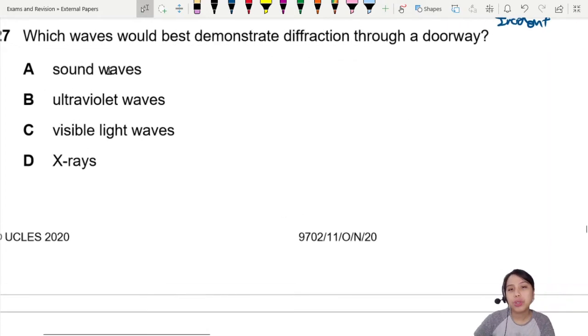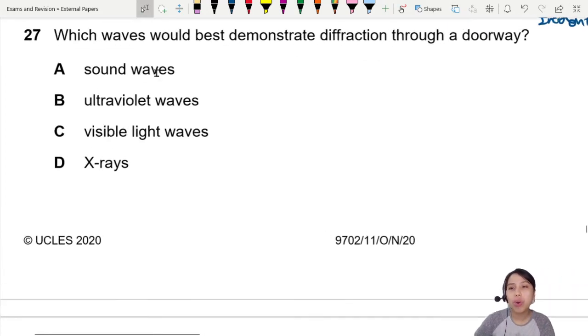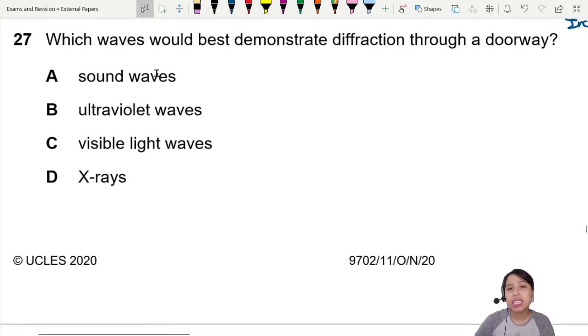Which waves would best demonstrate diffraction through a doorway? Sound, ultraviolet, visible light, or x-rays? How would you know?